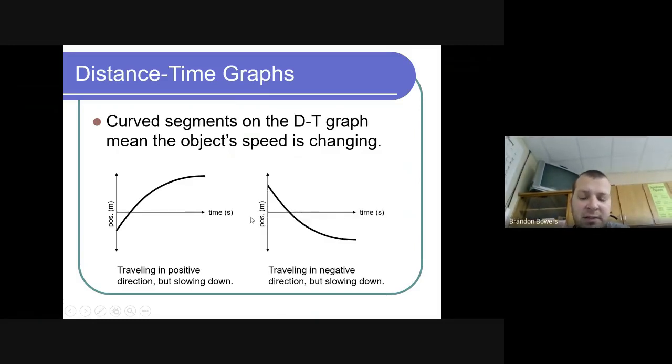Whereas this one, you're traveling in the negative direction fast, but as you start to flatten out, remember once you hit horizontal line you're not moving. So when you hit that horizontal line, you're going to slow down right before you hit it.